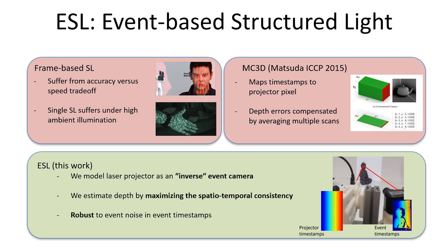In this work, we model the projector as an inverse event camera. Interpreting the projector and the event camera as a stereo system, we estimate depth by maximizing the spatio-temporal consistency between their time maps. Our approach does not consider events in isolation. Instead, it exploits correlation between local event neighborhoods to improve robustness to noise.